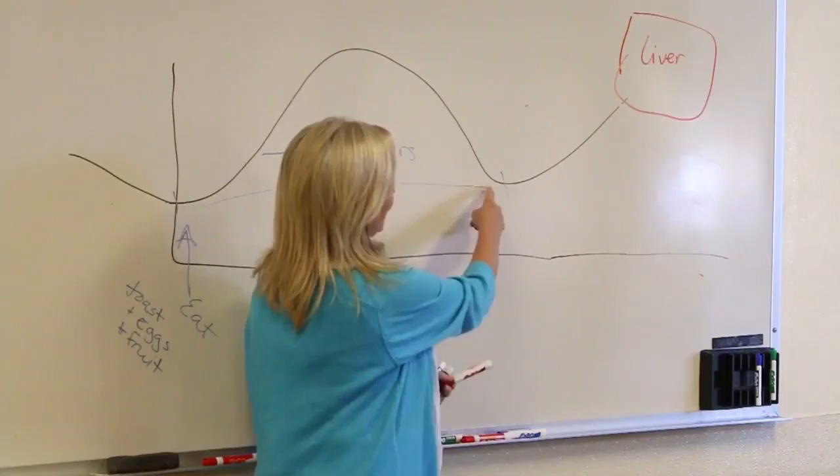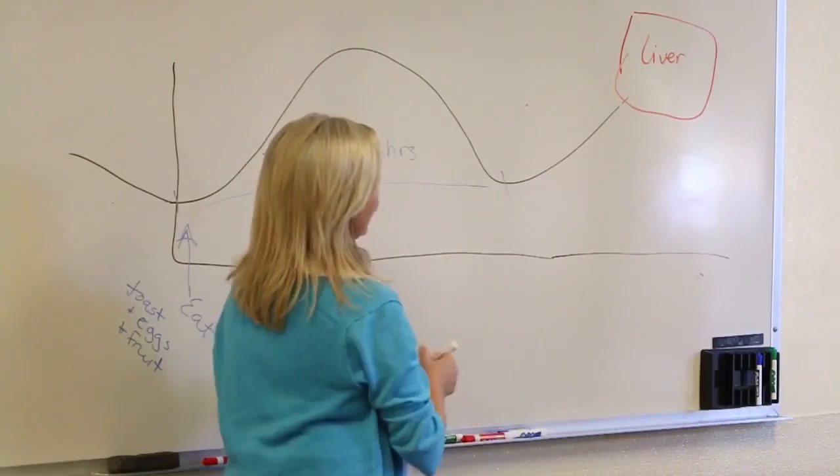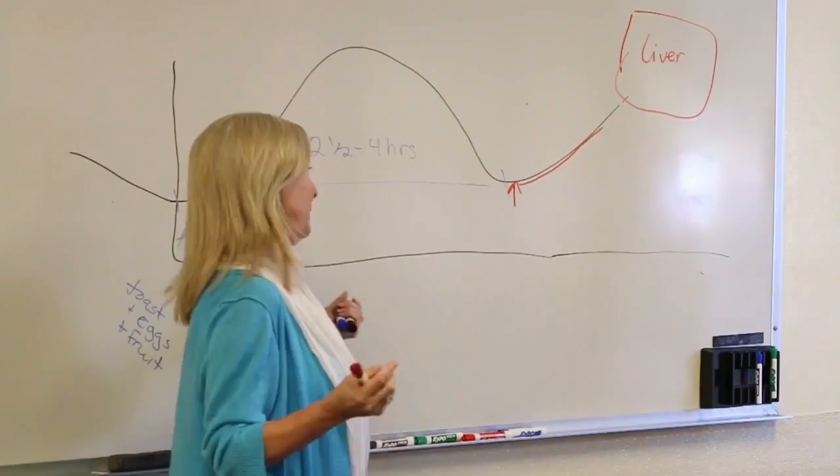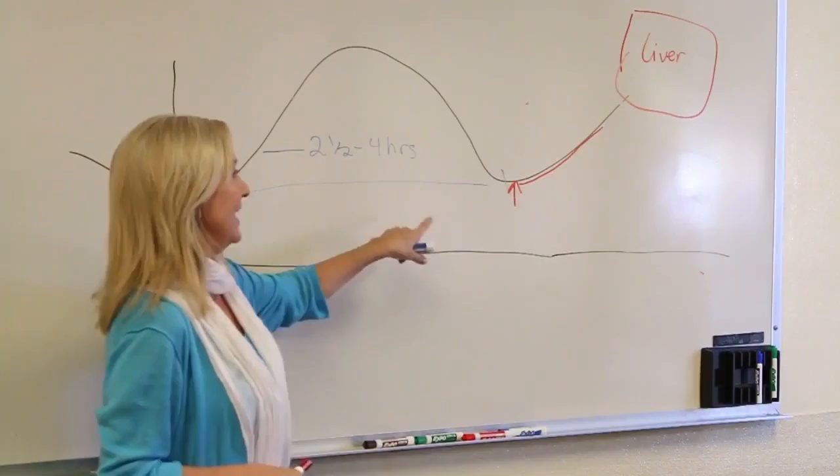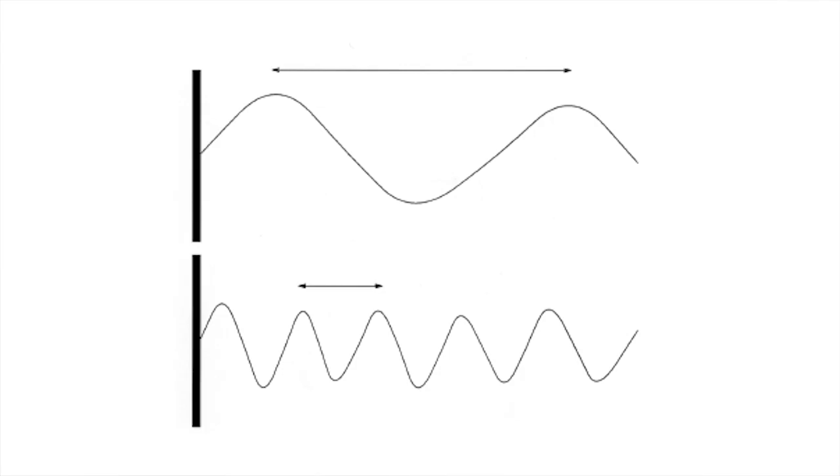So when your blood sugar starts to drop, a hormone glucagon comes over and says, hey liver, wake up. Give me some sugar. So it does. It gives a nice little kiss of sugar comes in here and then it goes back up again. And that repeats itself many times depending on how long you're sleeping or not eating, depending if you might be awake doing that.